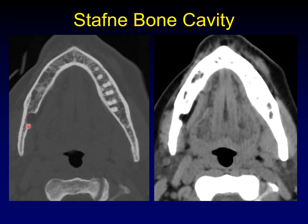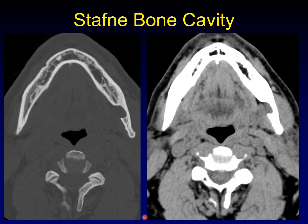You can see that the defect is lined by cortical bone — that's very important for a specific diagnosis. Here in this particular patient, the defect is filled with fat, although sometimes you see glandular tissue within the defect. Here's an example on the other side of the mandible showing the defect filled with glandular material. This is a portion of the submandibular gland that is coming around the edge of the pterygoid musculature.